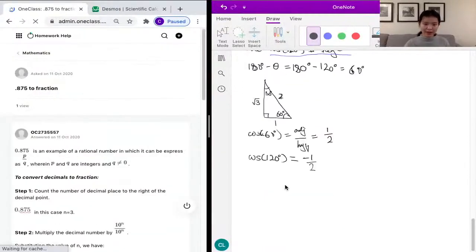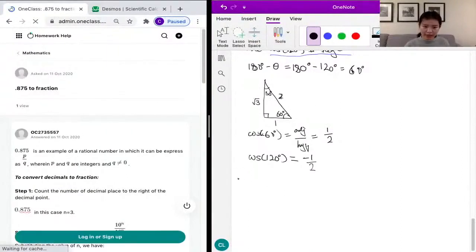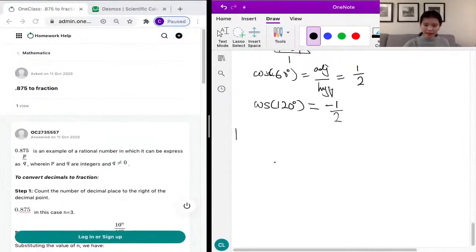Okay, for our next problem, we want to convert 0.875 to a fraction. I'll just zoom in a little. And here, for problem number 10, we want to convert 0.875 to a fraction.